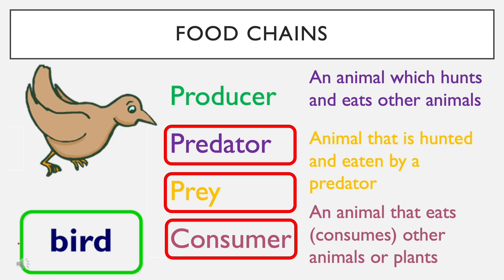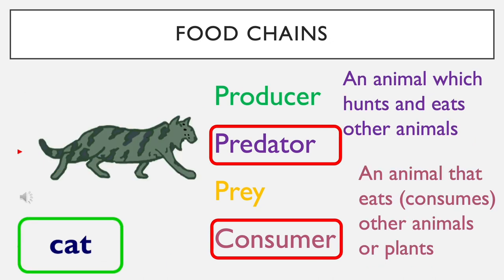The last organism in the food chain is the cat. The cat is classed as a predator because it can hunt and eat the bird. For the same reason, it is also a consumer.